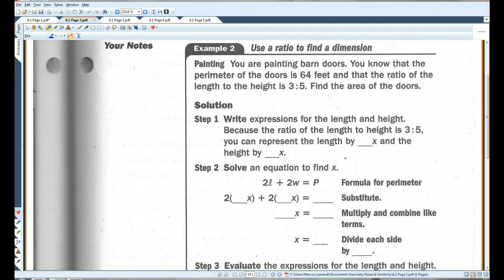Example 2. You are painting barn doors. You know that the perimeter of the doors is 64 feet and the ratio of the length to the height is 3 to 5. Find the area of the doors. So let's draw a picture. We'll say that these are our doors. We know that the perimeter all the way around is 64. Length to height is 3 to 5. So I'm going to call this 3x and 5x.